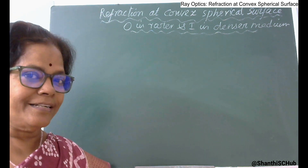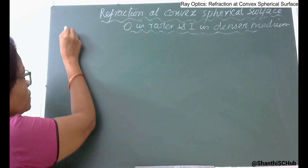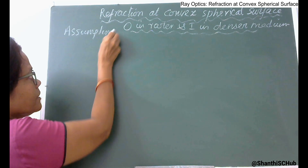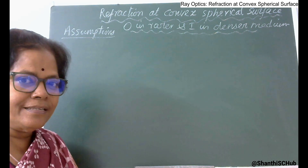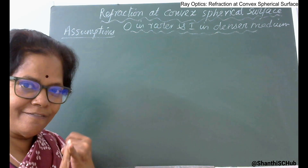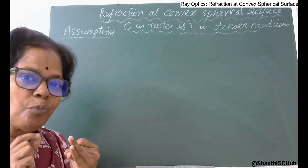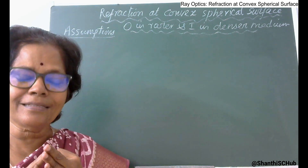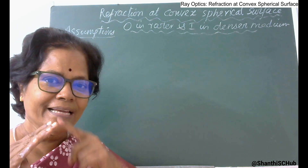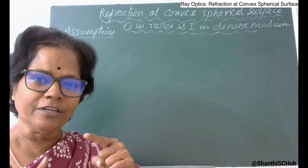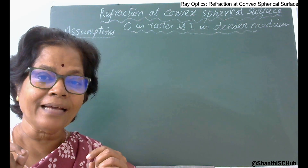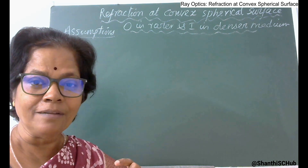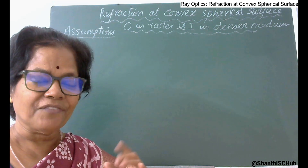Before starting, let us go over some basic assumptions. First, the convex surface has a small aperture. Second, there is a point object situated on the principal axis. Third, the incident ray, refracted ray, and normal at the point of incidence all make angles alpha, beta, and gamma respectively with the principal axis.